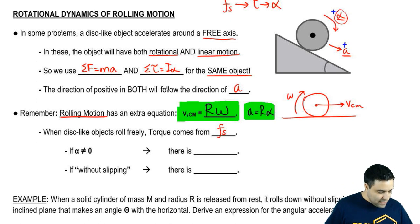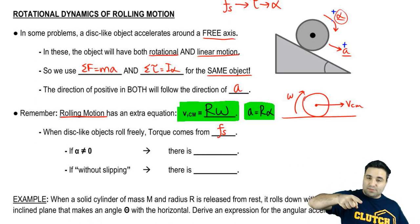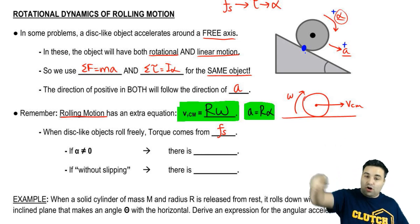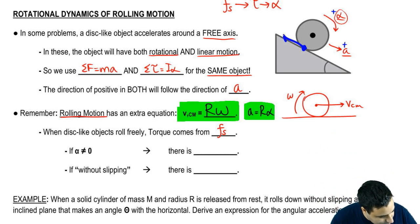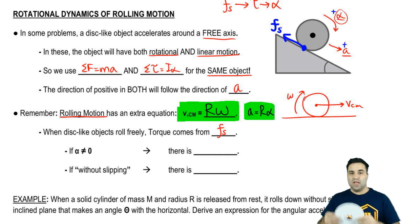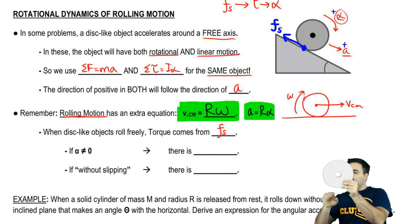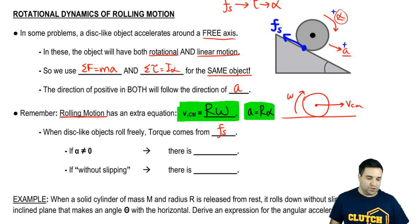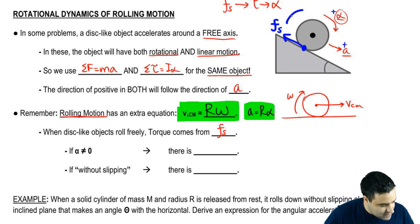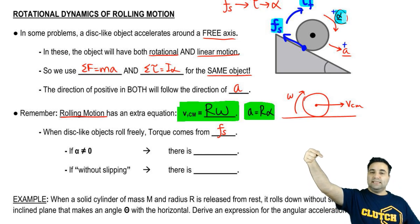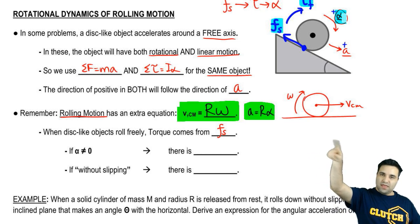So with static friction — if alpha is this way, then torque has to be this way, which means friction has to act in a direction that causes this. If you have a disk on a surface and you push in on the disk like this, it's going to cause the disk to spin. That's exactly what friction is doing. Friction goes this way and causes a torque of friction. So the force of friction produces a torque of friction, which causes an angular acceleration. The disk not only falls this way, but it also rotates as it's falling.